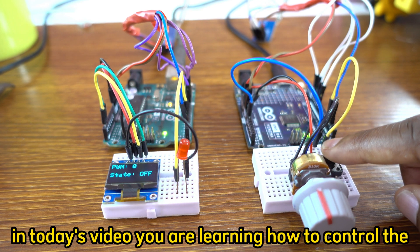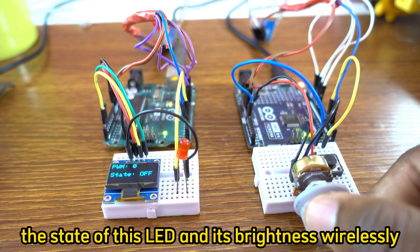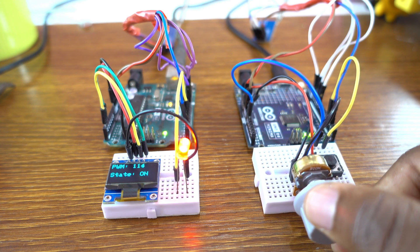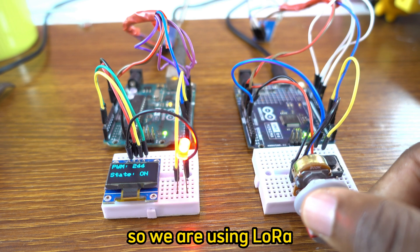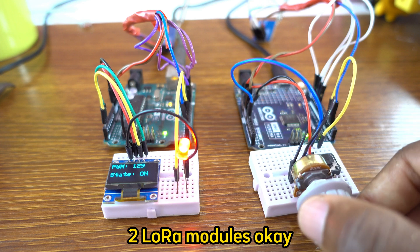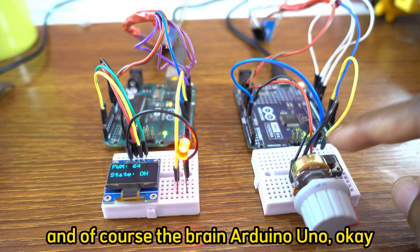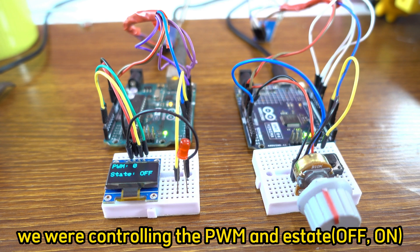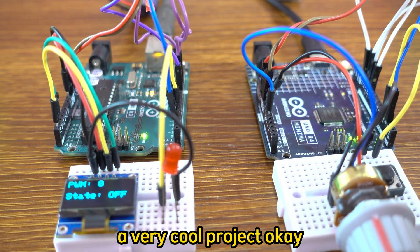In today's video you are learning how to control the state of this LED and its brightness wirelessly using a potentiometer and a push button. We are using two LoRa modules and of course the brain Arduino Uno. So we were controlling the PWM and the state of the LED, a very cool project.